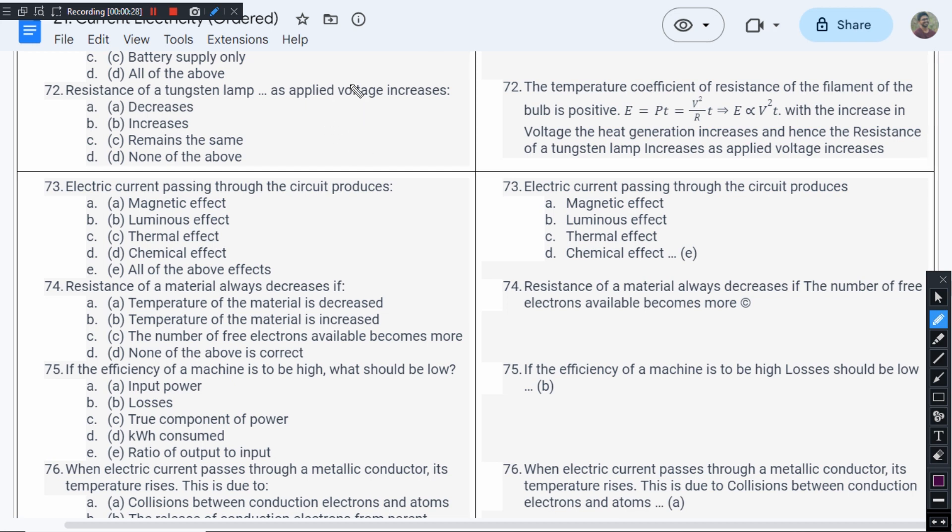But let's go deeper into it. Tungsten has a positive temperature coefficient of resistance, meaning resistance increases as temperature increases. Temperature is directly proportional to heat produced, and the heat produced equals V²/R × T/J.